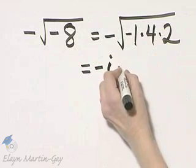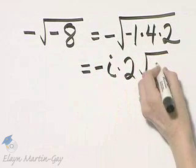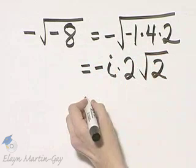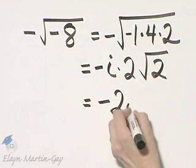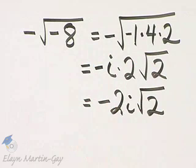What is the square root of 4? That is 2, and this 2 remains under the radical. So I can write this as negative 2i square root of 2, and I've simplified it.